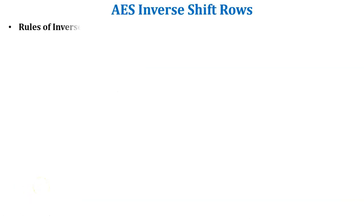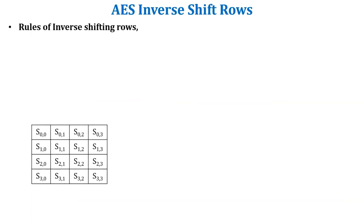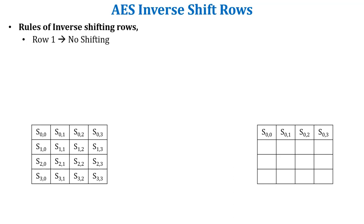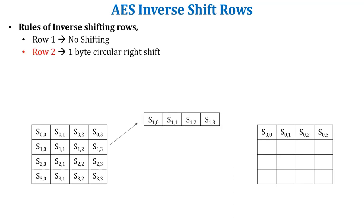Let's check the rules of inverse shift rows in AES. For example, this is my state array. I have to perform inverse shift rows on this state array. Rule number one is row one — there is no shifting, so it means row one is as it is. The next rule is row two: one byte circular right shift.